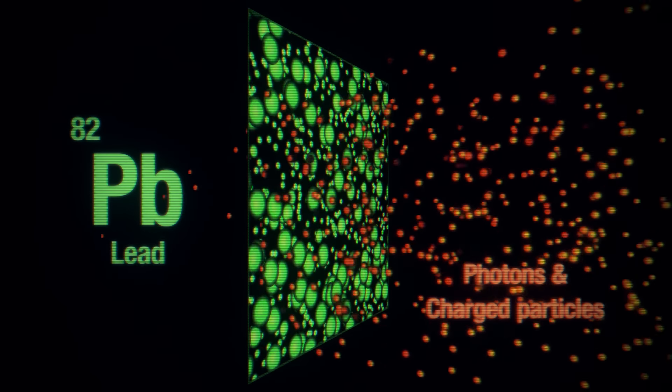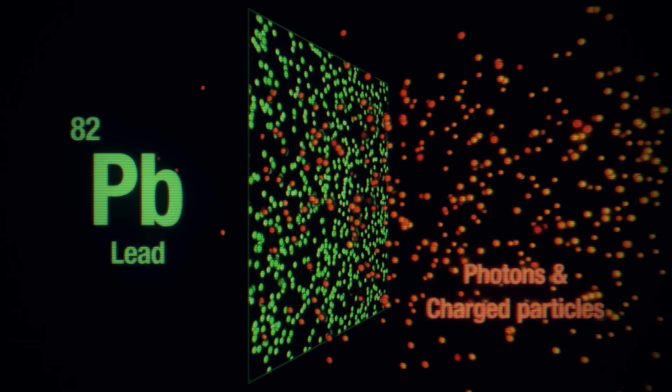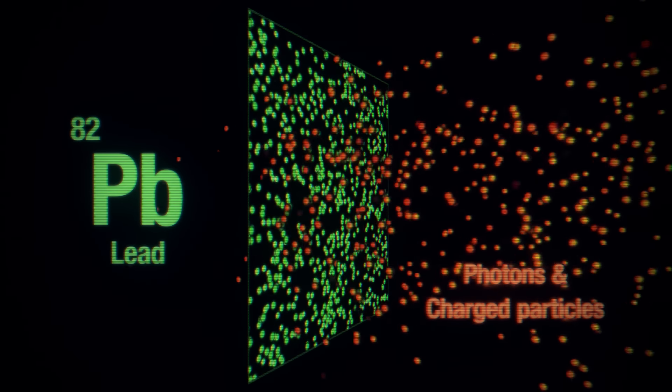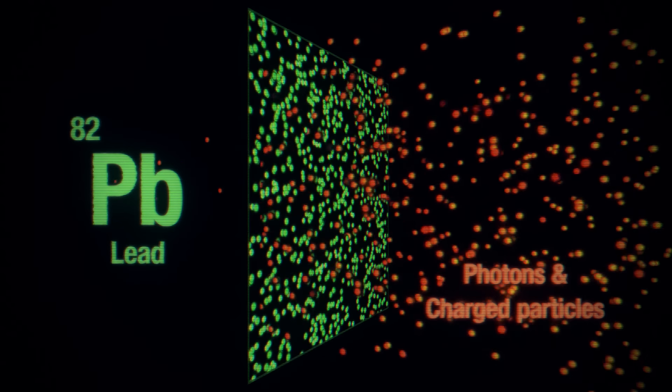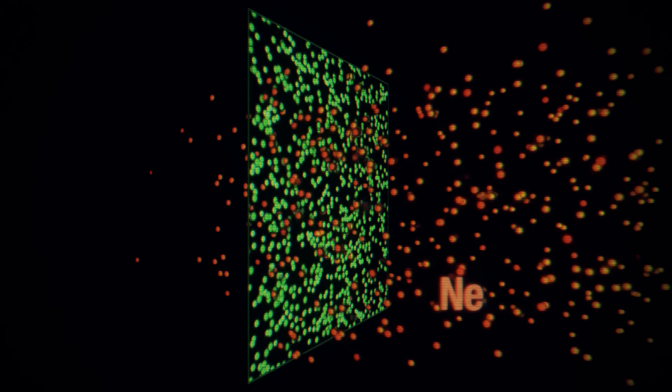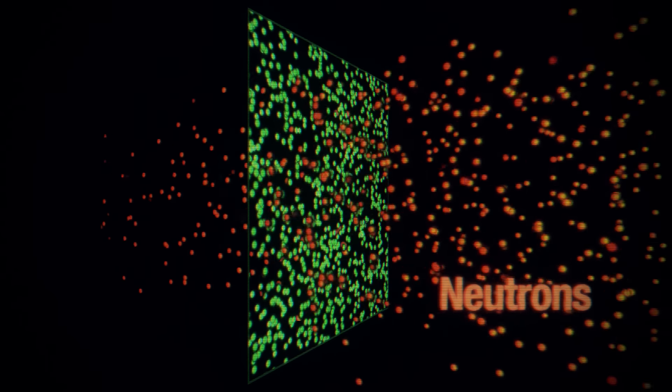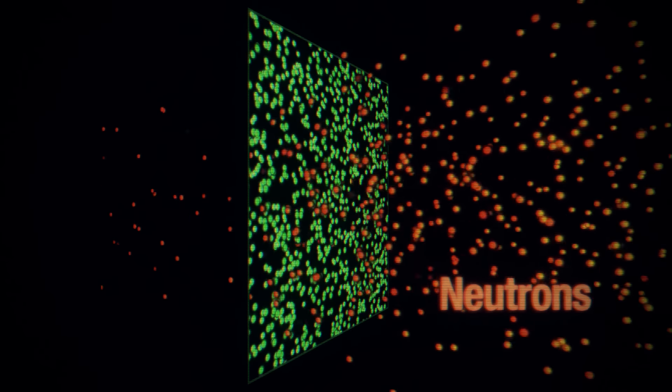Lead, for example, is good at blocking photons and charged particles, but that's because that radiation interacts electrically, and inside lead there's a lot of heavy stuff and electrons to interact electrically with. But neutrons, like those that fly out of a nuclear reactor, are electrically neutral, and so they don't get stopped in the same way.